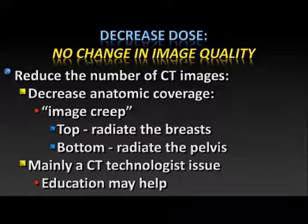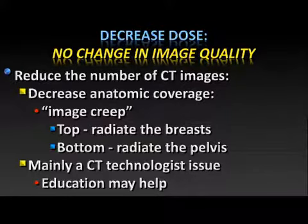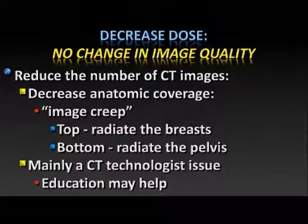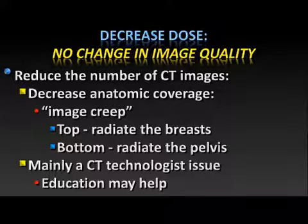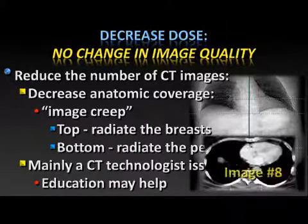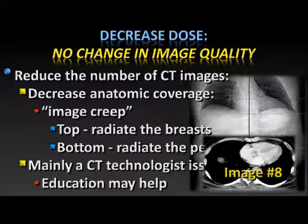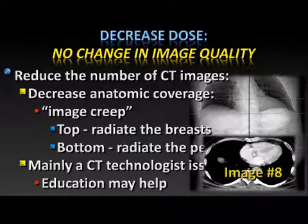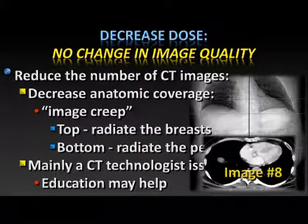We have this image creep — for years we've taught our technologists not to exclude important anatomy from the field of view, and they don't want to be called out on an inadequate scan. So one way to get around that is to be a little generous and start high and scan low. In the abdomen, for example, if you start scanning too high above the diaphragm, you're going to inappropriately radiate the breast. Here's an abdomen and pelvis scan where it wasn't until the eighth image that we actually got to the top of the diaphragm — eight images with unnecessary breast radiation.